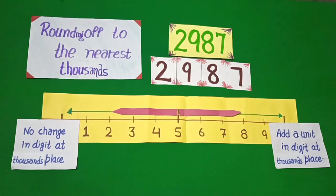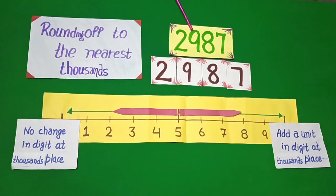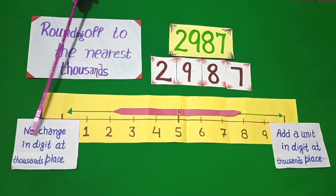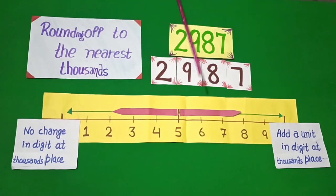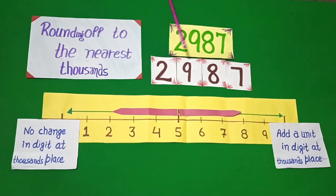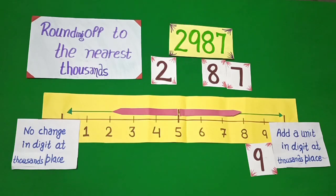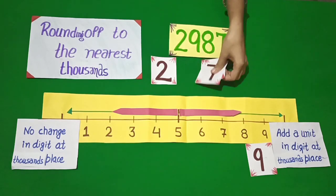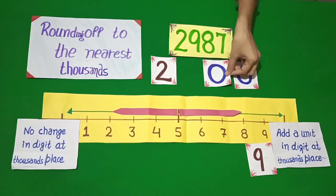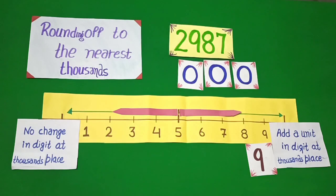Students, when we do rounding off to the nearest 1,000, we look at the digit at the 100th place. If the digit is 4, 3, 2, or 1 at the 100th place, there is no change in the digit at the 1,000th place. If the digit is 5, 6, 7, 8, or 9 at the 100th place, then we add a unit to the digit at the 1,000th place. We have digit 9 at the 100th place. If you want to round off to the nearest 1,000, put right 3 zeros. See then the 100th digit — 5 to 9, add a unit to the 1,000th.